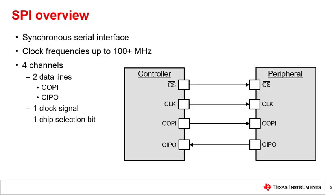SPI is a synchronous serial interface used by FPGAs and microcontrollers to communicate with a variety of peripherals such as flash memories, sensors, ADCs, and SD cards over short distances. In SPI, typically one main controller is used to communicate with one or more peripheral devices.